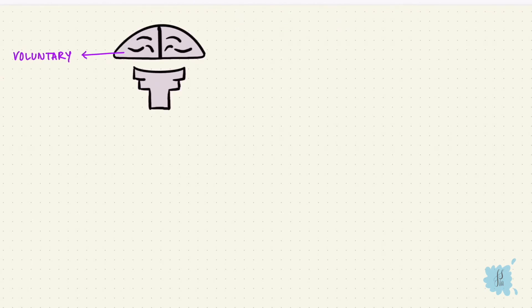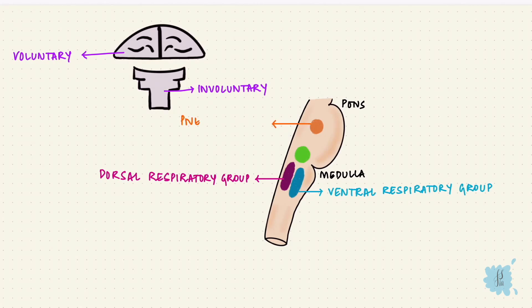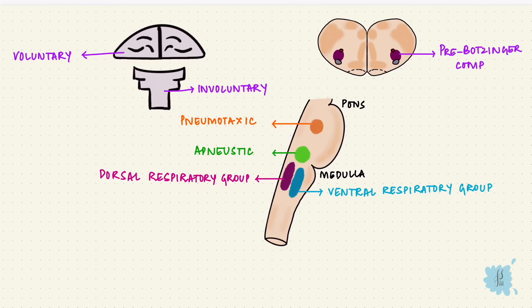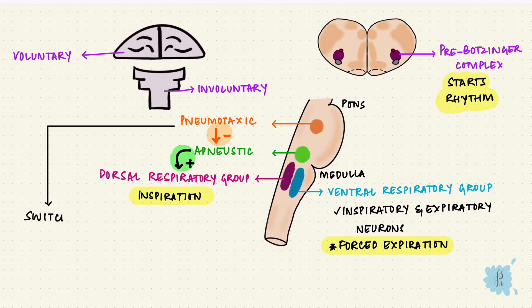Putting it all together: voluntary respiration is controlled by the cerebral cortex. Involuntary or automatic control is by the brainstem — the medulla and the pons. The medulla has two groups of neurons: the dorsal group and the ventral group. The pons has the pneumotaxic center and the apneustic center. The dorsal and ventral groups project to the pre-Bötzinger complex, which initiates the respiratory rhythm. The dorsal group regulates inspiration; the ventral group, with both inspiratory and expiratory neurons, mostly regulates forced expiration. The apneustic center stimulates the inspiratory neurons in the dorsal group, and the pneumotaxic center inhibits the apneustic center, thereby controlling the rate and depth of breathing by switching off the inspiratory center.